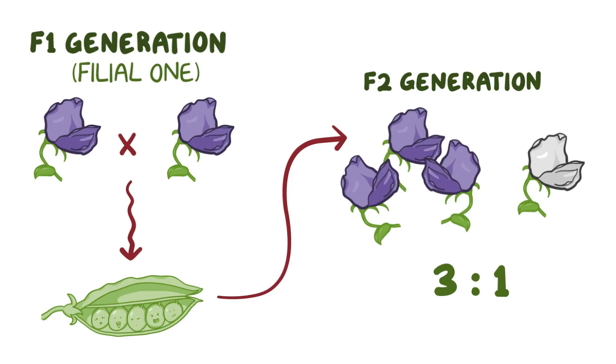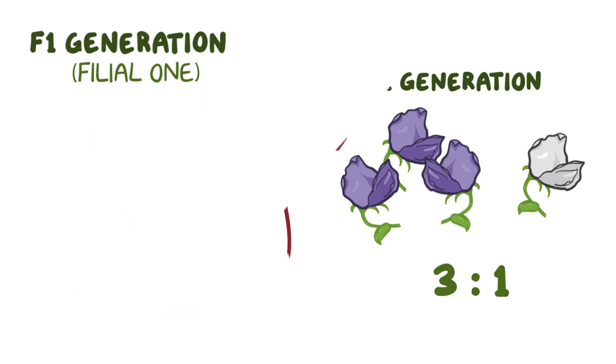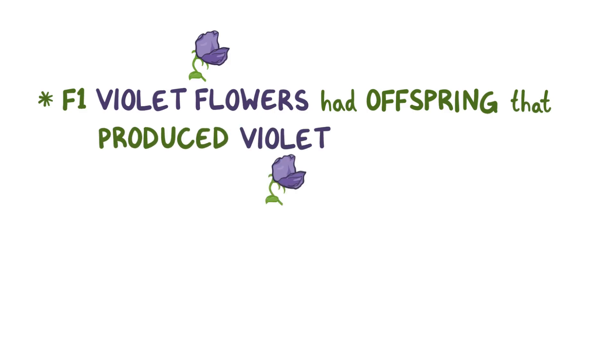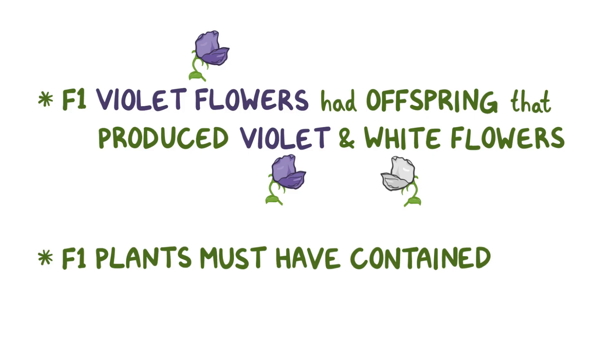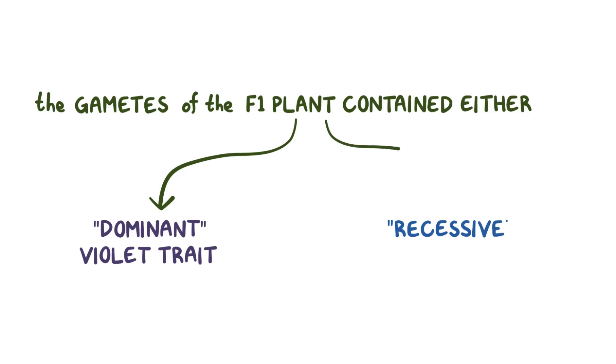Based on this experiment Mendel drew a few conclusions. First, since the F1 violet flowers had some offspring plants that produced violet flowers and other offspring plants that produced white flowers, it meant that the F1 plants must have contained both of these elements. The inheritable elements of pea plants are its gametes, so that meant that the gametes of the F1 plant contained either the dominant violet trait or the recessive white trait.